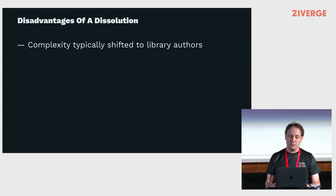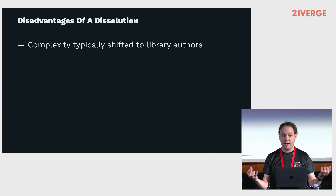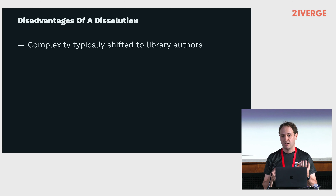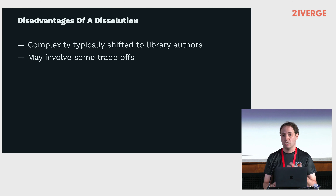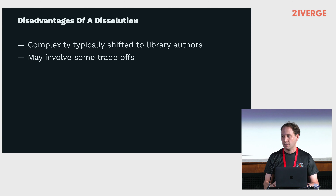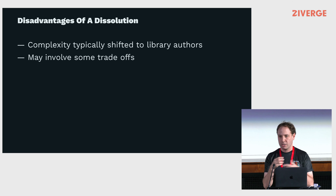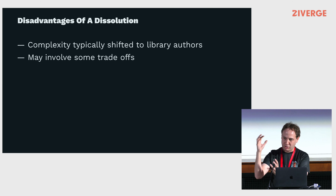What are the disadvantages of dissolution? It typically shifts complexity to library authors — there is underlying complexity that exists in the world and has to be managed somewhere. But library authors are better positioned to bear that cost. It may involve some tradeoffs: in this case, there's a small performance cost to making everything lazy because you wrap it in an additional function zero. But if you're doing IO effects, that's not going to be material. If you're worried about a function zero allocation, you shouldn't be using this at all.